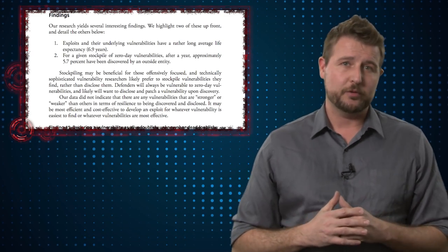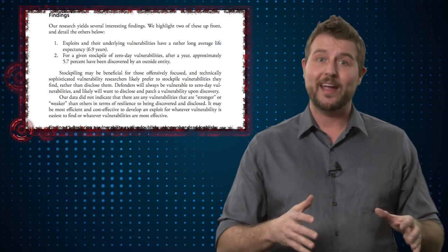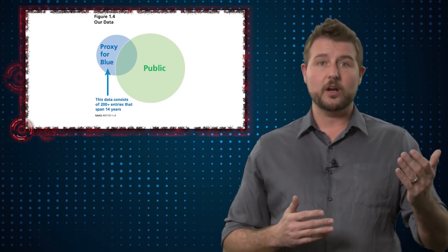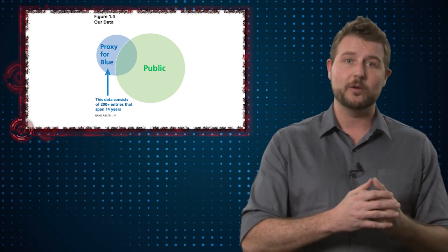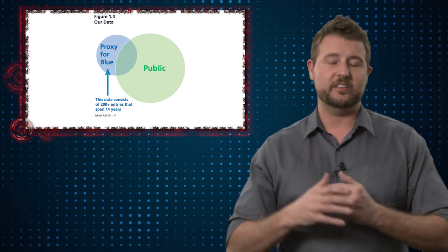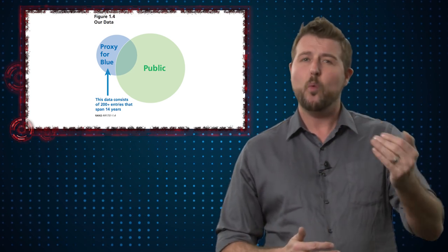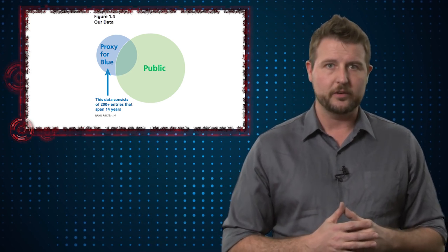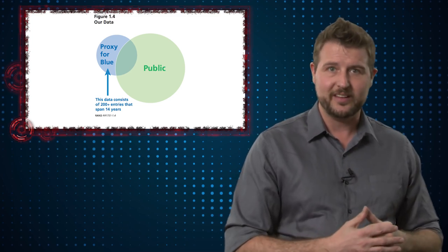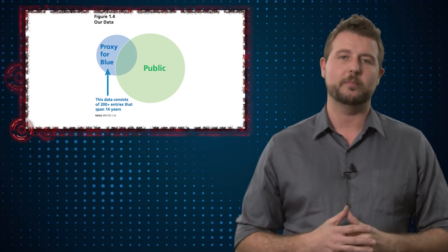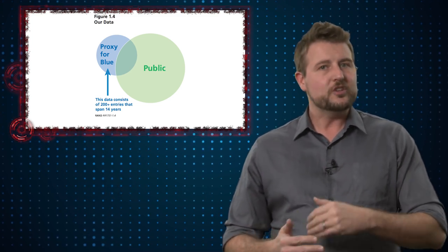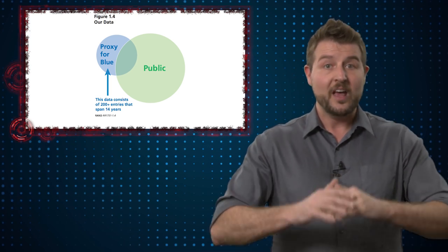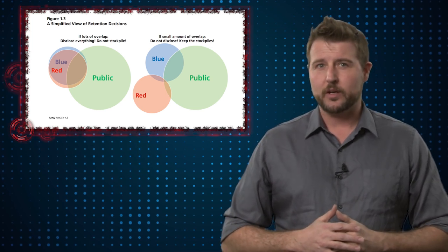The other issue I have with this particular collision metric is how the RAND study actually came up with it. Basically, they compared this particular unnamed source that had these vulnerabilities against public disclosure. Because they only have one source of zero-day vulnerabilities, they don't know if criminals are holding on to zero-day, they don't know if other nation states have zero-day which no one knows about. Long story short, they're just comparing one zero-day source to public disclosure of vulnerabilities. I don't believe it's a true metric of collision.